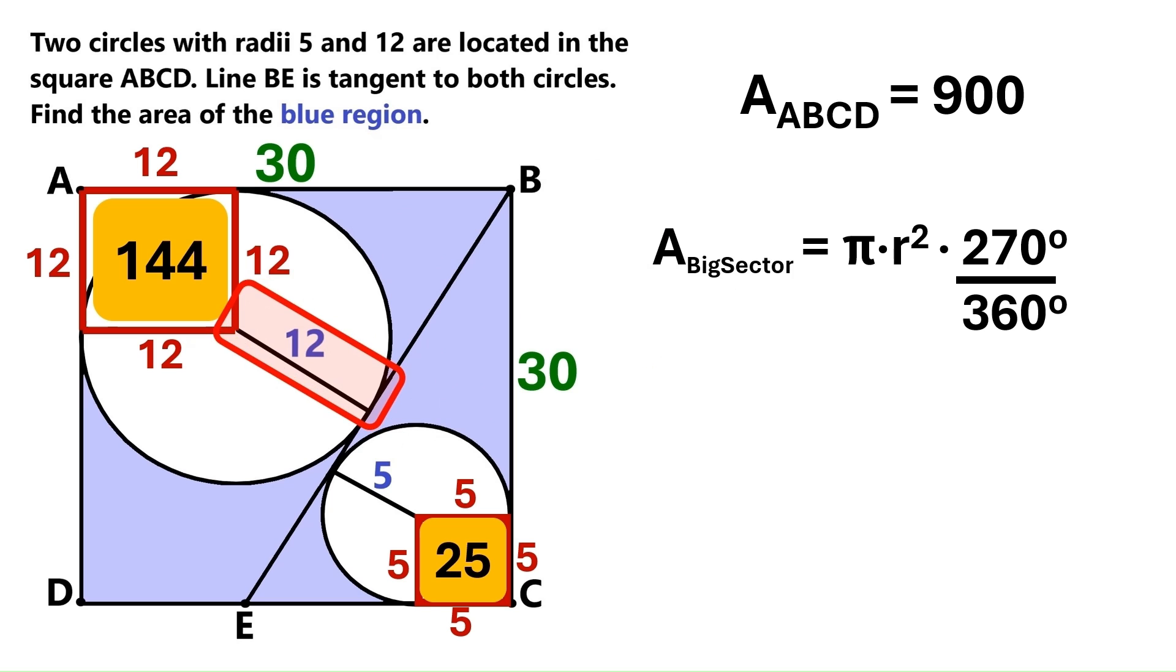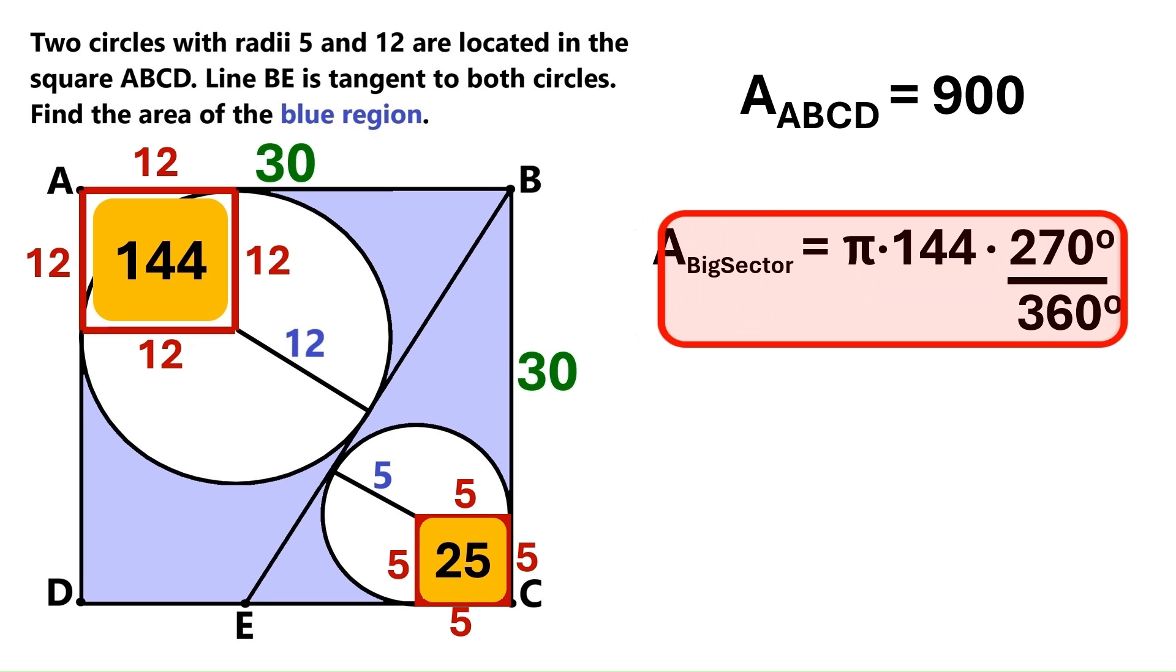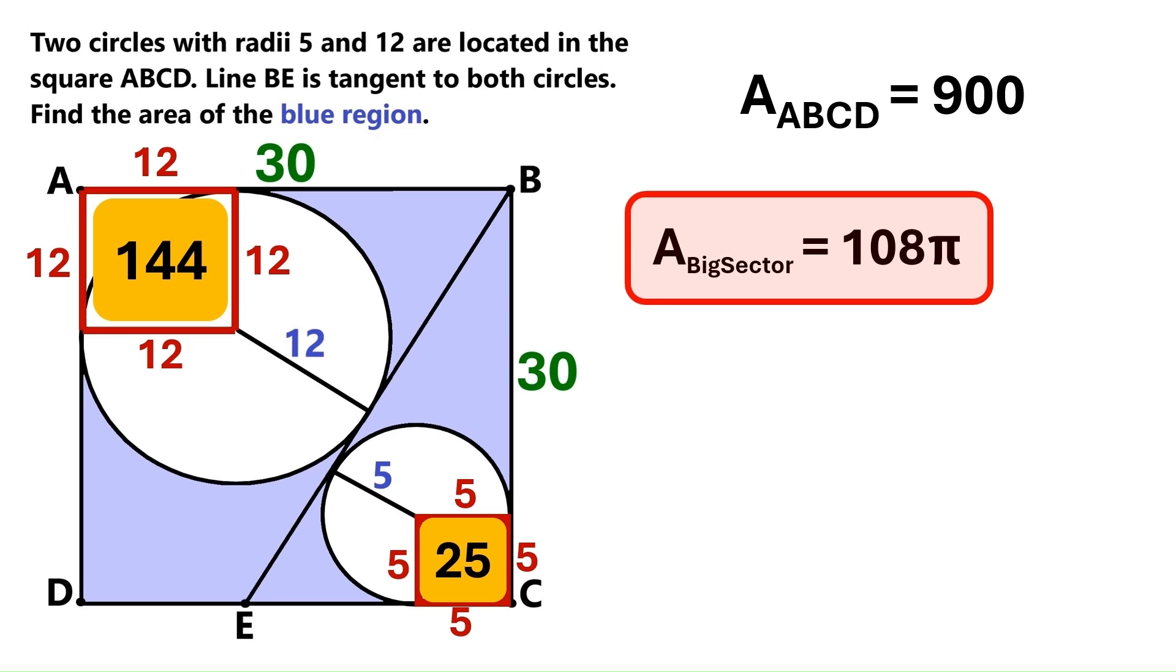We know the radius is 12. So let's replace this r squared with 12 squared, which is 144. We do the math. And the area of the big sector turns out to be 108 pi.